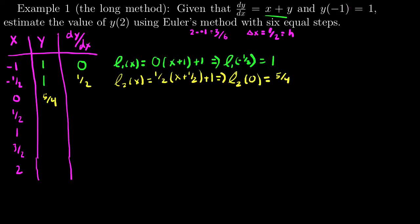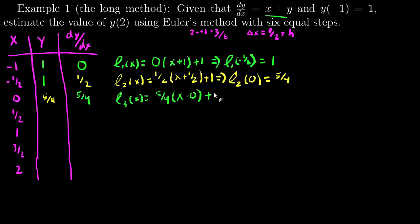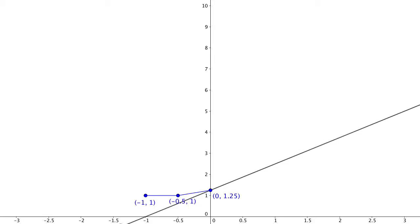I continue and make my third tangent line. Adding x plus y: 0 plus 5/4 gives me a slope of 5/4. So the third linear approximation is (5/4)·(x − 0) + 5/4, and I evaluate this at the next step of one half. L₃(1/2): one half times 5/4 is 5/8, plus 5/4, which is 10/8, gives me 15/8. Back to the graph — I created a third tangent line, took a half-unit step to the right, and got that new point.